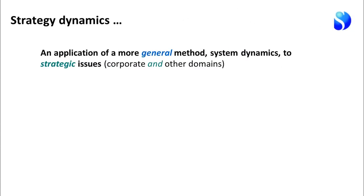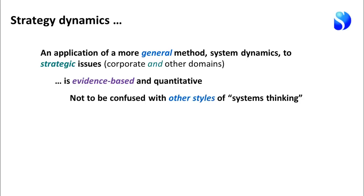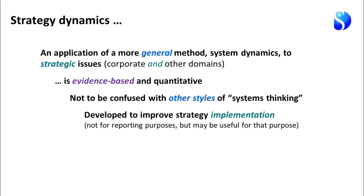Strategy dynamics is an application of a more general method called system dynamics, which has been around since the 1950s, applied here to strategic issues — in this case corporate issues — though the method works in all kinds of other domains like environment and healthcare. The method is evidence-based and quantitative: we're actually putting data in about how the system works and performs. It's important not to confuse system dynamics with other styles of systems thinking. Lastly, the method was developed to help improve strategy implementation, so its target was corporate management.